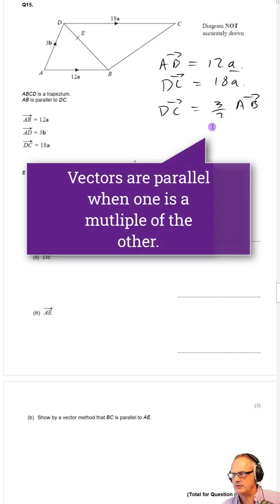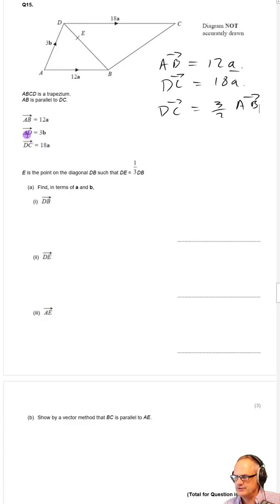We're also told in this question that AD is equal to 3b, and E is the point on the diagonal DB such that DE is one-third of DB. So this is one-third of the way along and this is two-thirds.